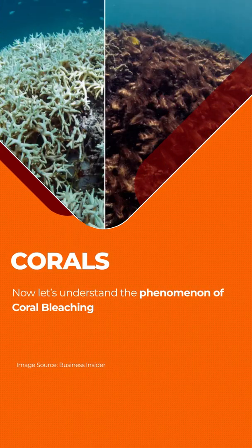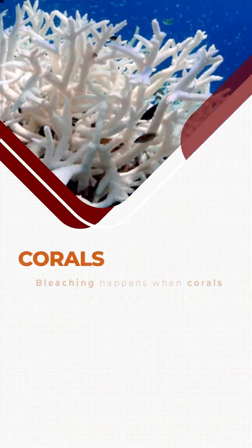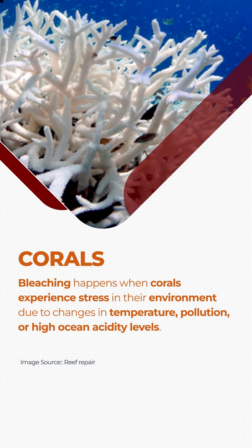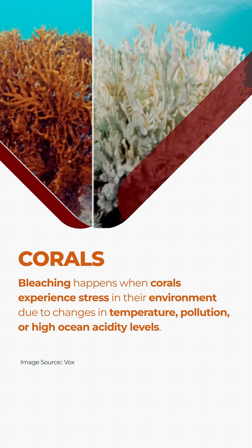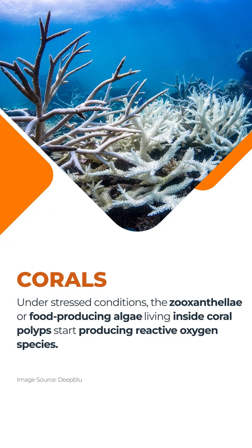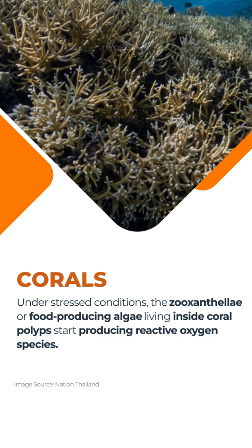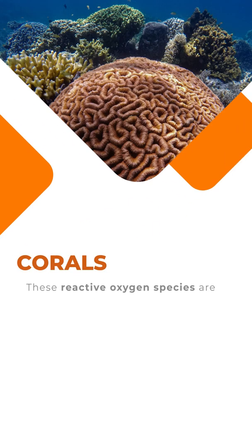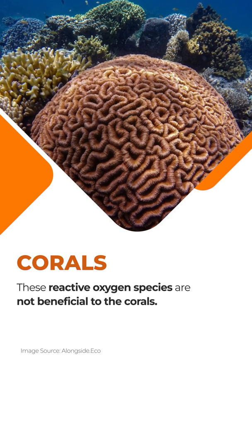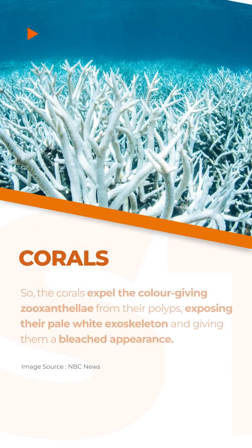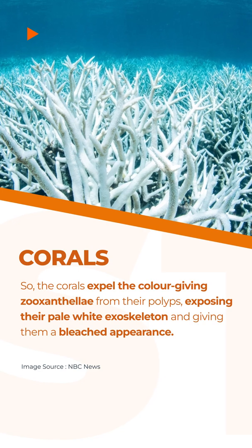Now let's understand the phenomenon of coral bleaching. Bleaching happens when corals experience stress in their environment due to changes in temperature, pollution or high ocean acidity levels. Under stressed conditions, the zooxanthellae or food-producing algae living inside coral polyps start producing reactive oxygen species. These reactive oxygen species are not beneficial to the corals, so the corals expel the color-giving zooxanthellae from their polyps.